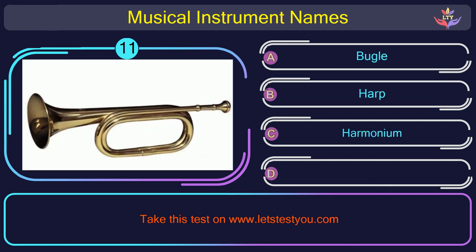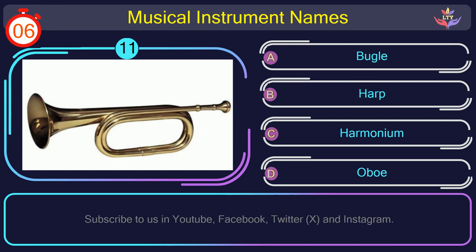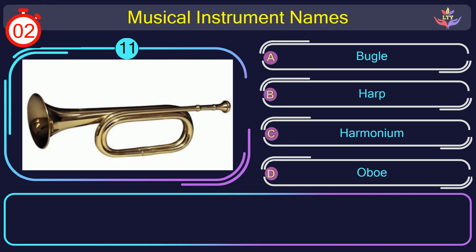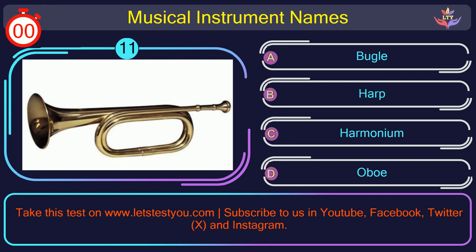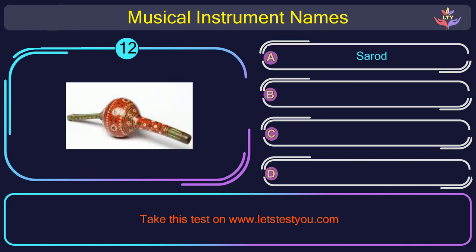Question number 11. Could you recognize the name of the musical instrument in this picture? The correct answer is option A: Bugle. Bugle is a brass instrument with a simple design, commonly used in military signals and calls.